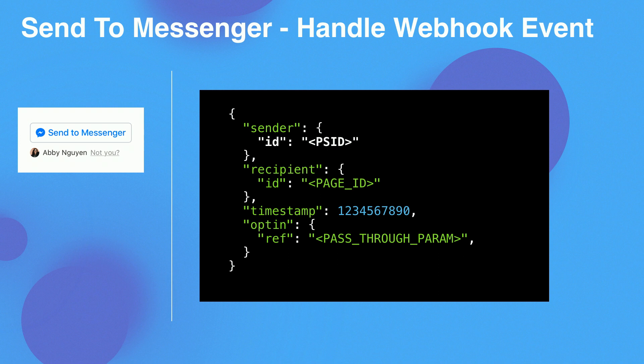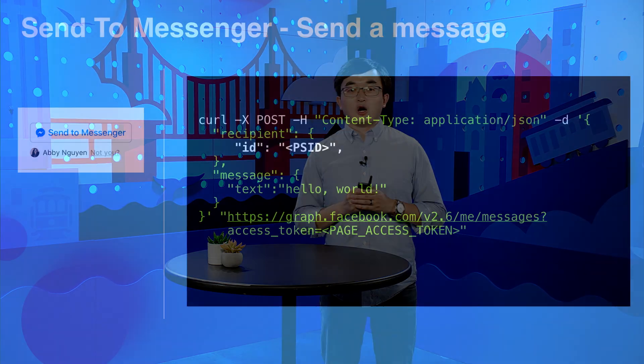Once you have installed and customized the plugin, you need to update your webhook endpoint to handle the opt-in event. Once you receive the opt-in event, you will have the user's PSID. Then you can start using our Send API to send messages to the user. The Send API can be used to send different types of messages, including text, images, and other template messages. The example shown here is simply sending a text message 'hello world' to the user using the PSID you have from the webhook opt-in event.